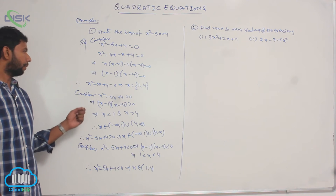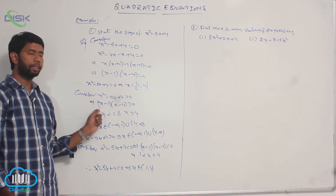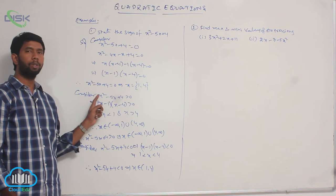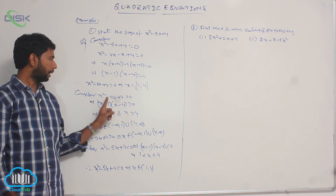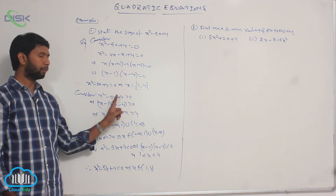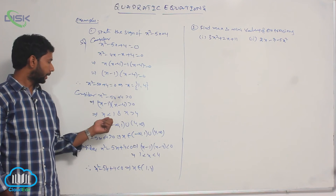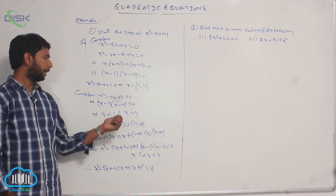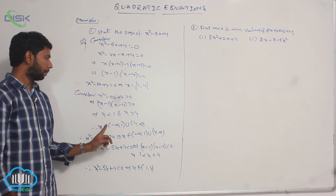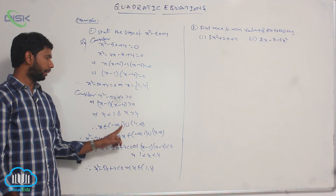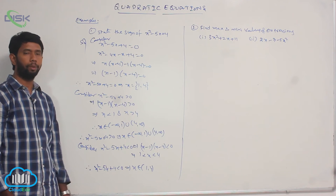For what values of x is the expression positive? That is, x² - 5x + 4 > 0, which means x < 1 and x > 4, so x belongs to (-∞, 1) ∪ (4, ∞).